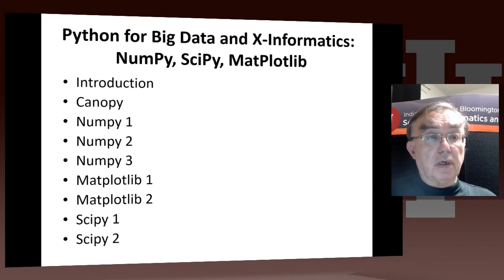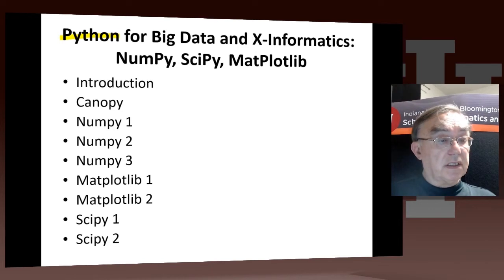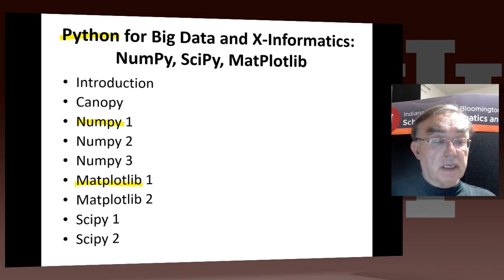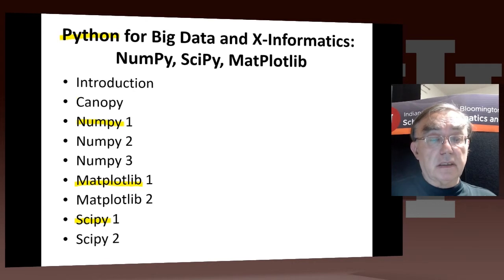Here we have our side MOOC on Python. This is not the place you go to learn Python — it is just meant to describe those aspects of Python that you'll need for this class, and that is numpy (numerical Python), matplotlib (how you plot things in Python), and scipy, which has things like the K-means algorithm, and statistics — the key libraries for scientific computing. Canopy is the software that we use, which comes from a company called Enthought, and it's downloadable for free.